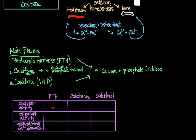Calcitriol has the same overall effect as parathyroid hormone — it increases calcium and phosphate in the blood by taking it from bone. So as calcitriol increases, you would expect osteoblast activity — the activity of building bone — to decrease, because you're taking calcium and phosphate from the bone and putting it in the blood.